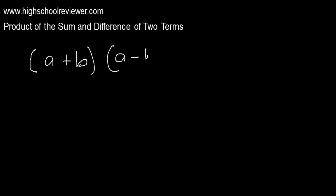Product of the sum and difference of two terms. Let's have an example. We have the quantity of a plus b multiplied by the quantity of a minus b. This is the product of the sum and difference of two terms because, as you can see here, we have two terms inside the parentheses — the first term which is a and the second term which is b. The same terms are also present in the second quantity. So we have the sum and the difference. But how do we solve the product of the sum and difference of two terms?